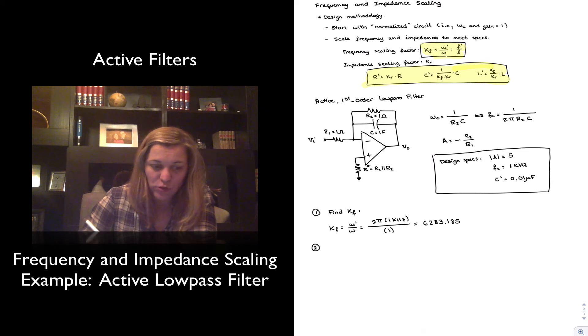Step number two is I'm going to find the value of my impedance scaling factor, KR, for my desired value of final capacitance. So I have that my C' is going to be equal to 1 over KF·KR times C before.